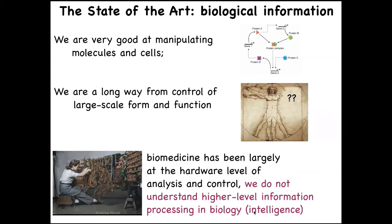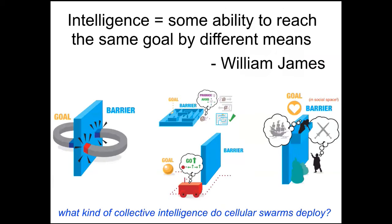What we're missing in biomedicine is addressing the intelligence layers that exist in biological hardware. When I say intelligence, I mean William James's idea: the ability to reach the same goal by various means. We're not asking what kind of brain it has or what it's made of — it's the cybernetic definition focusing on the goals of the system and how competently it meets those goals when new things happen.